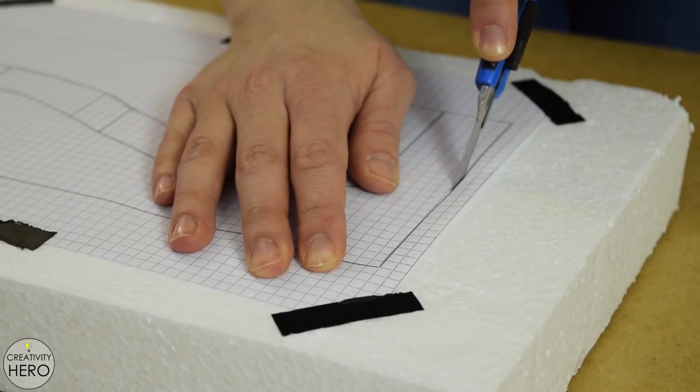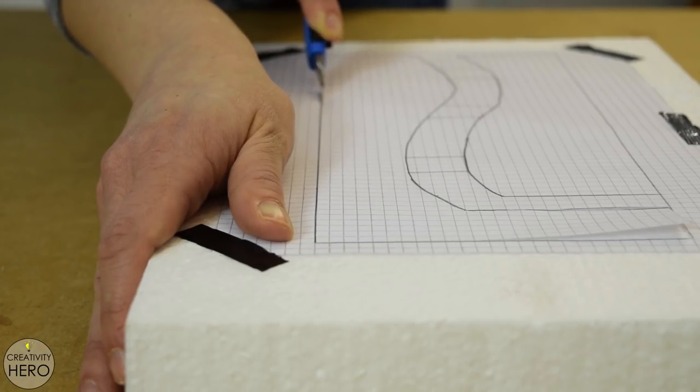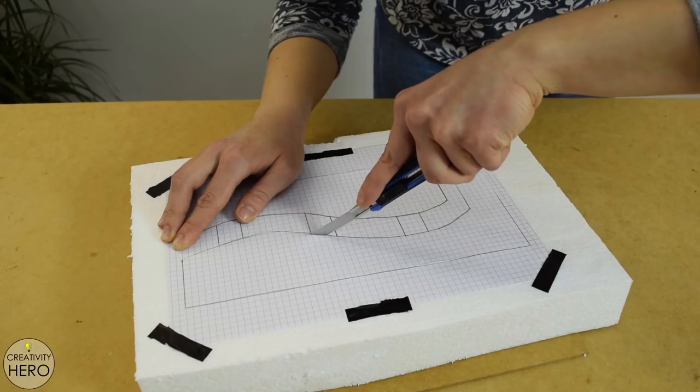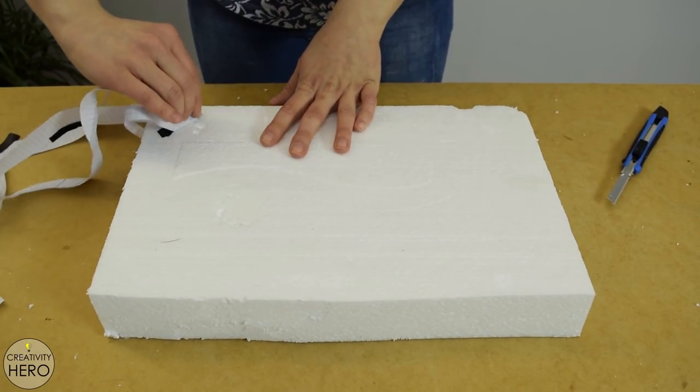I found the sharpest utility knife and started cutting, making sure I follow the lines and keep the knife straight. After that I removed the paper and the two cutouts as well.